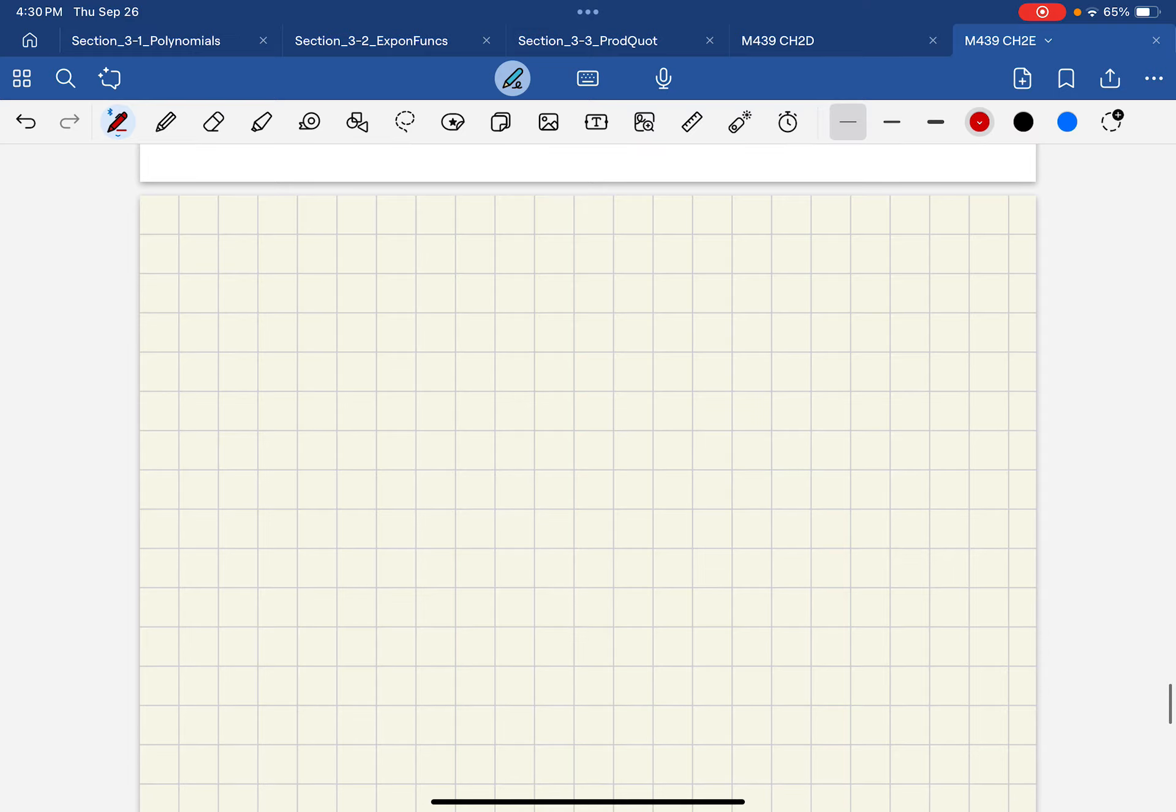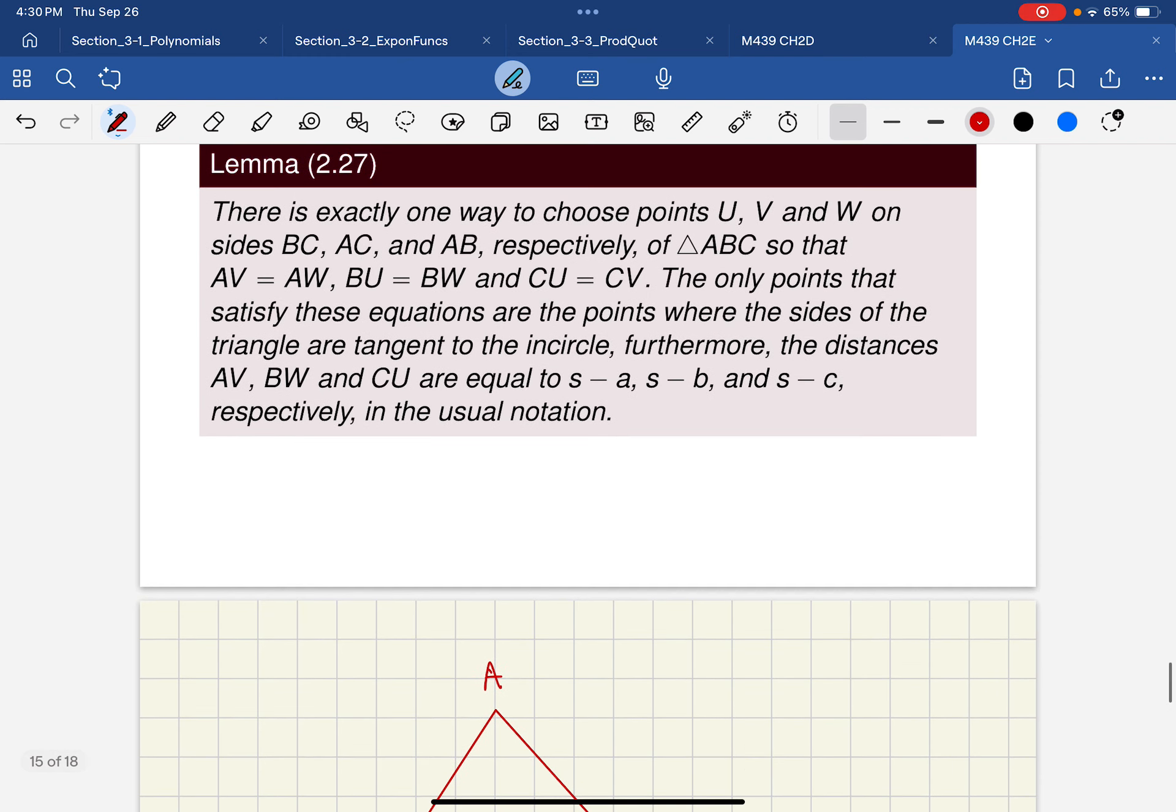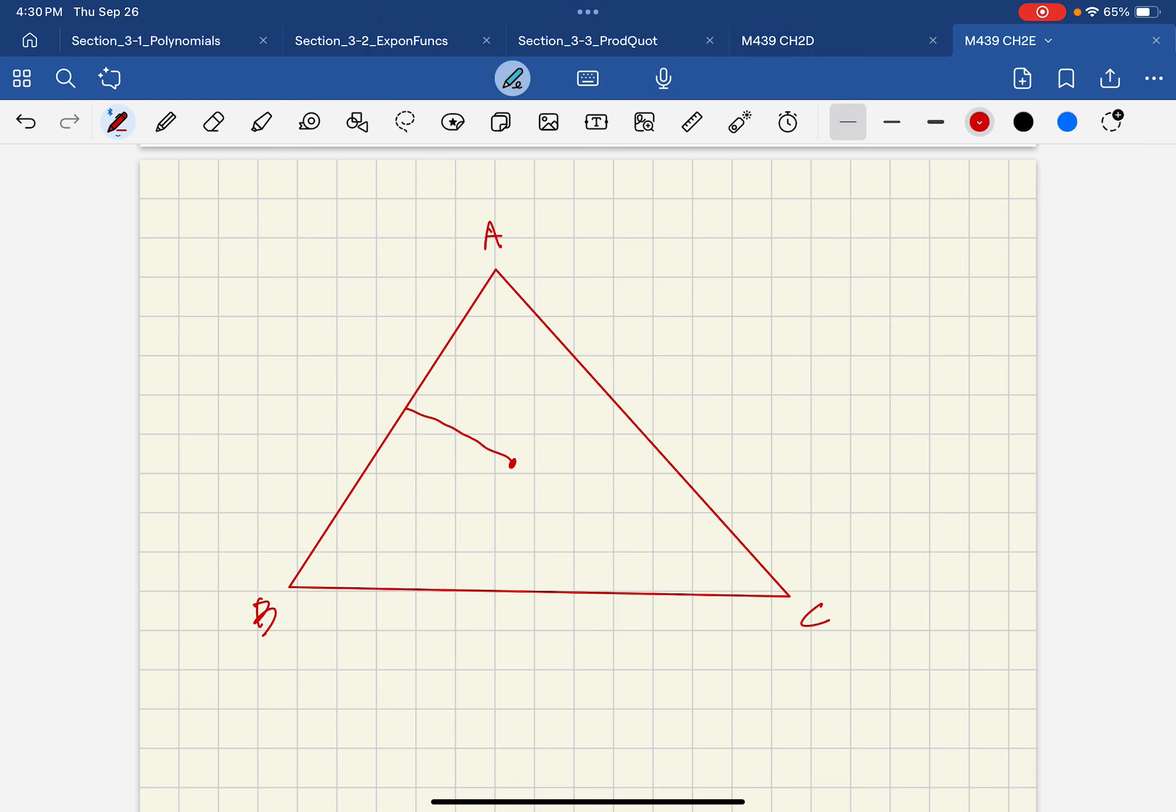So if we draw our triangle up and we sort of try to find the middle of the triangle, the incenter, and, let's see, A, I'm trying to remember exactly how he labels and I want to look at this again. So this one, if you think of this like the incenter, this one we would call W, this one we're going to call V, and this one we're going to call U.